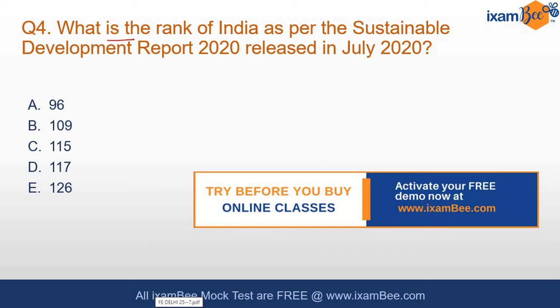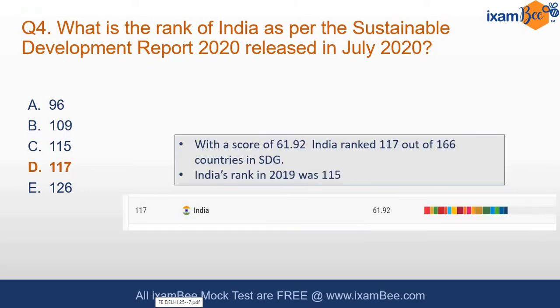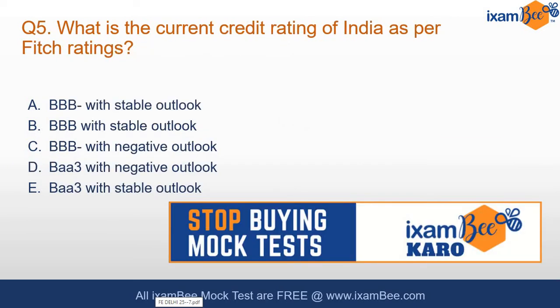The fourth question: what is India's rank in the Sustainable Development Report 2020? India's rank is 117 with a score of 61.92. This ranking is for the achievement of Sustainable Development Goals. In 2019, India's rank was 115, so India has gone down — not because India hasn't progressed, but because other countries have progressed better.